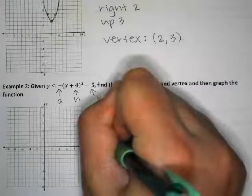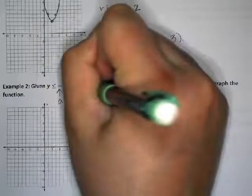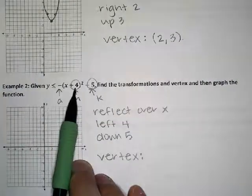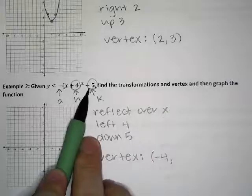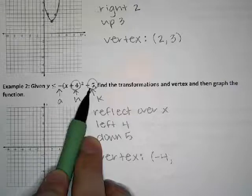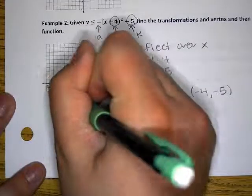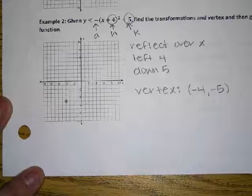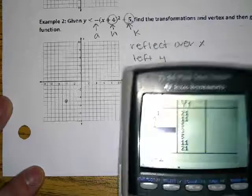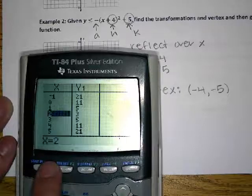The K value is negative 5, which means it goes down 5. For our vertex, we look at the H and K values. We take the opposite of positive 4, which is negative 4. Then we take exactly the number on the end — negative 5. So the vertex is (-4, -5). I'm going to graph negative 4, negative 5.